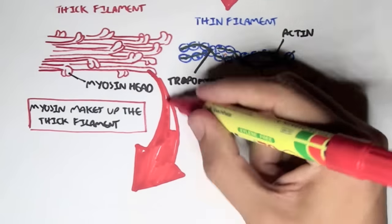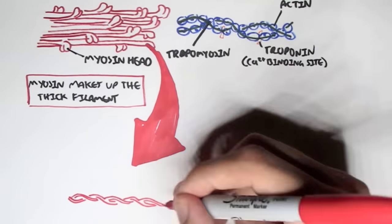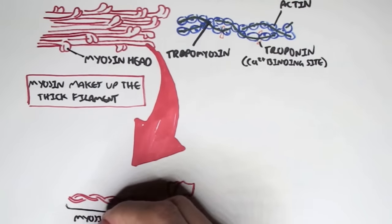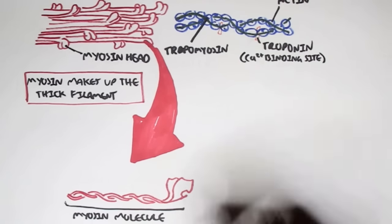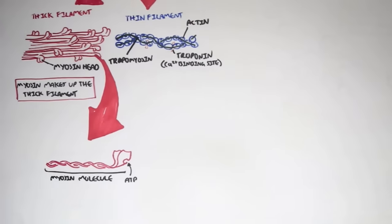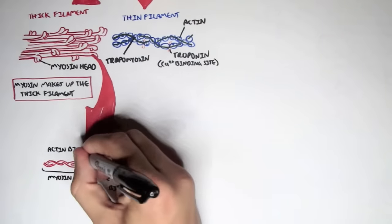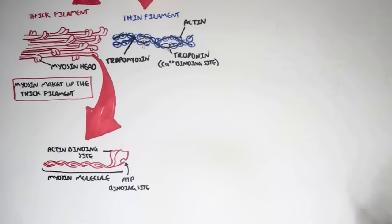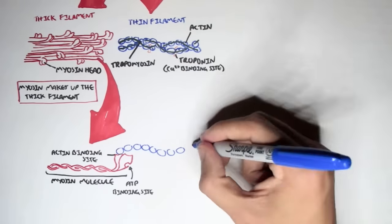Zooming into one myosin molecule, the myosin proteins actually wrap around together to form a helix as well, which is why we have two myosin heads in duplicates. The myosin head contains two important sites: one is an ATP binding site, and the top has an actin binding site, so it can bind to the actin proteins of the thin filament.